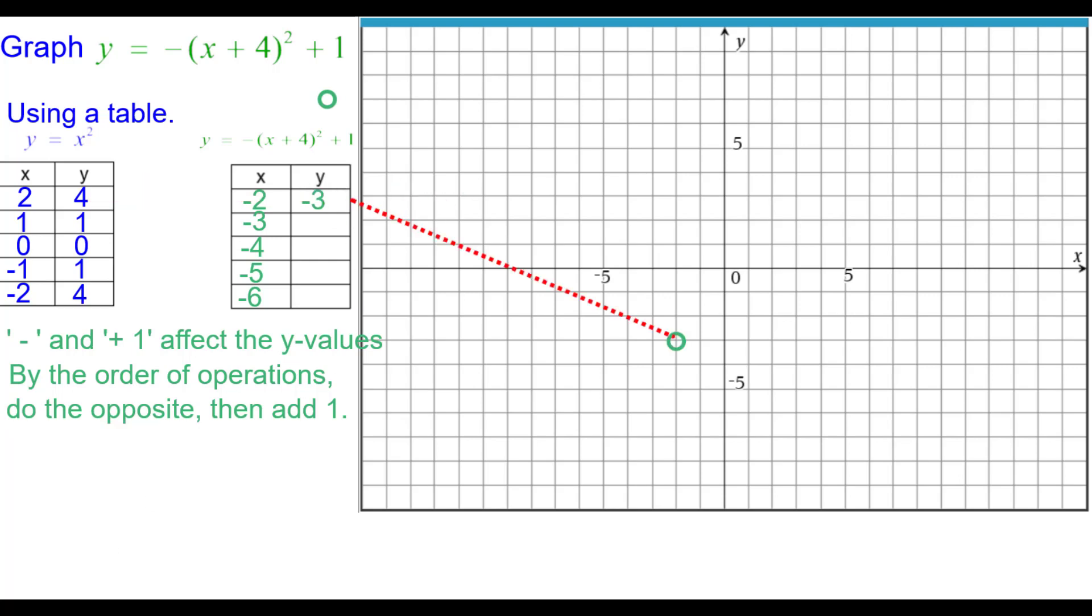And plotting negative 2, negative 3. The opposite of 1 is negative 1 plus 1 is 0. So we plot negative 3 comma 0. We ask you to pause and finish the table. Plot the points. Resume when you're ready.